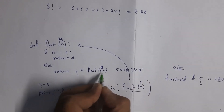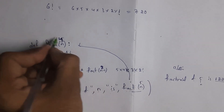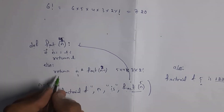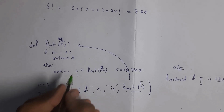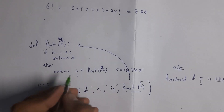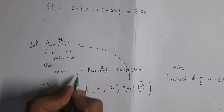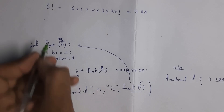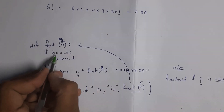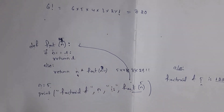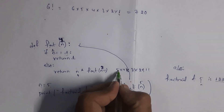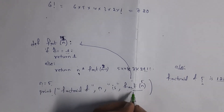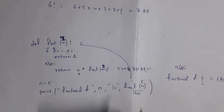Now n is 2, which is not equal to 1, so else returns 2 * fact(1). Now n is 1, and 1 == 1, so it returns 1 and stops. So the final result is 5 × 4 × 3 × 2 × 1 = 120. This result is placed in the function call, so I get the output: factorial of 5 is 120.